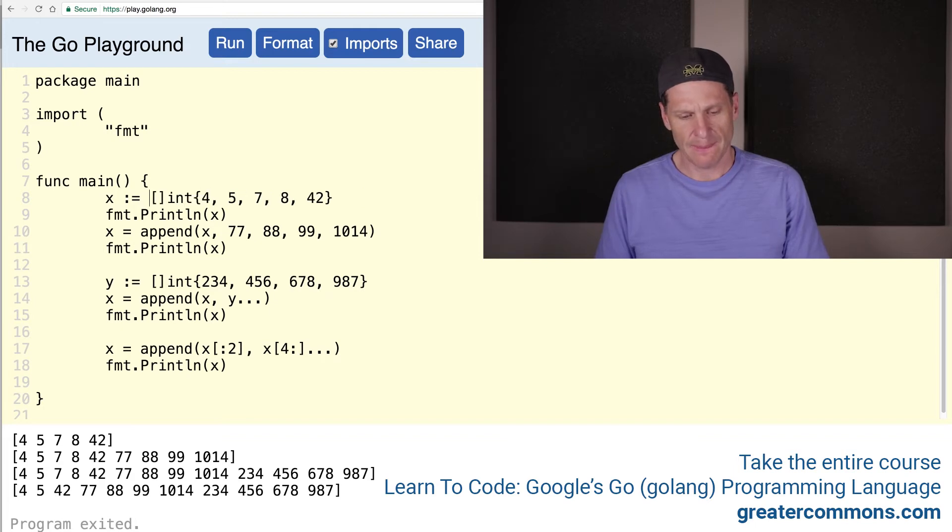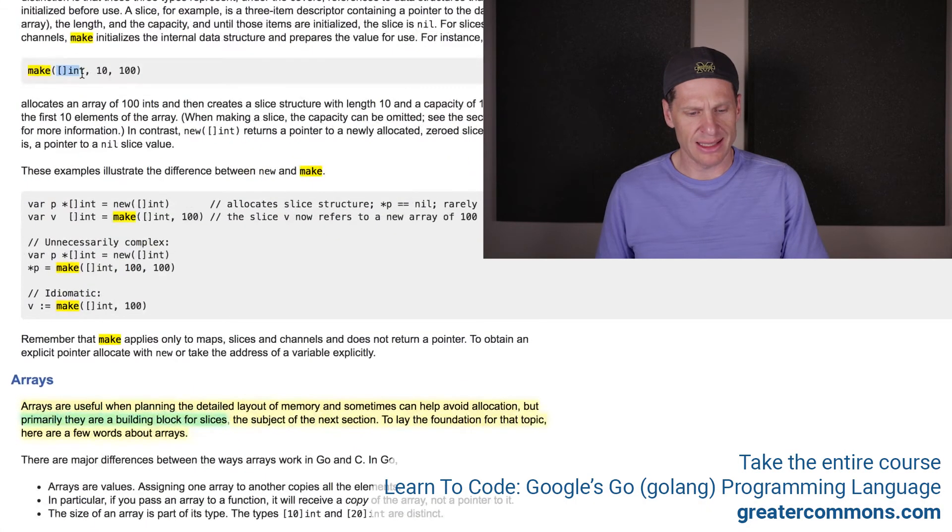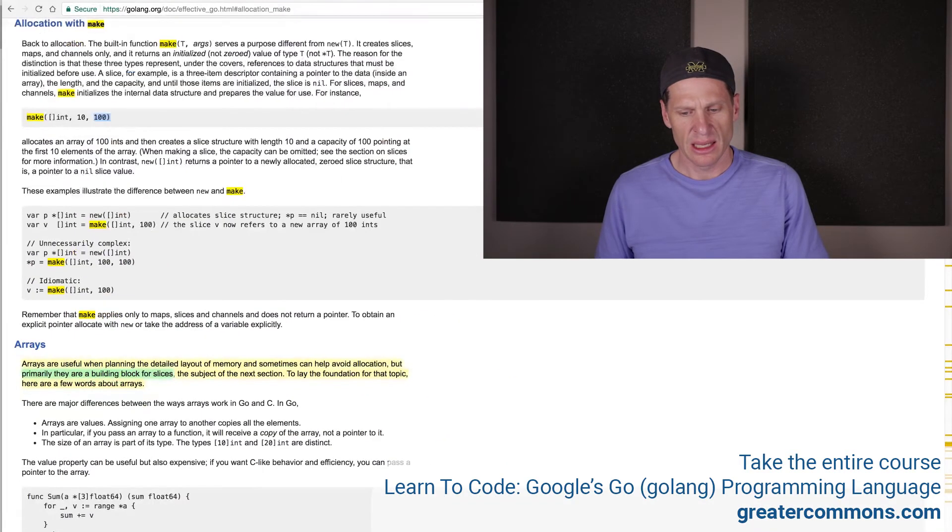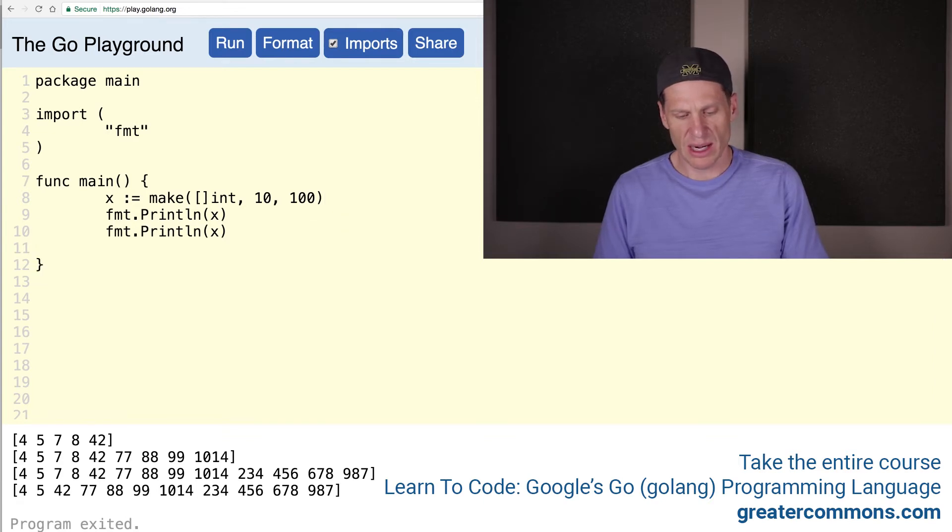All right. So now I'm going to do make and then parentheses. And inside those parentheses, I'm going to put the type. And if we go over and we look at effective go, we can see that we have make. And you need the type. And then you need the length. And then you need the capacity. And so let's explore that. We have make. And we have slice of int. And we need the length. So we'll say 10. And we'll do the capacity of 100. So now we can print this out. Let's just print it out and see what it is. And we can print out x. And we can also print out the length. And we can print out the capacity.